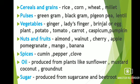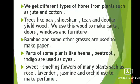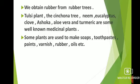We get different types of fibers from plants such as jute and cotton. Trees like oak, shisham, teak and deodar yield wood. We use this wood to make carts, doors, windows and furniture. Bamboo and some other grasses are used to make paper. Parts of some plants like henna, beetroot and indigo are used as dyes. Sweet-smelling flowers of many plants such as rose, lavender and jasmine are used to make perfume. We obtain rubber from rubber trees. Tulsi, neem, eucalyptus, cinchona, clove, aloe vera, ashoka and turmeric are well-known medicinal plants. Some plants are used to make soaps, toothpaste, varnish and rubber.